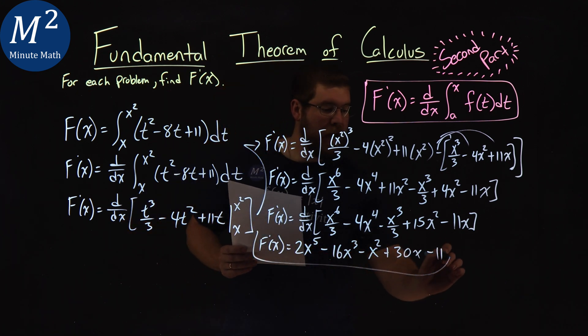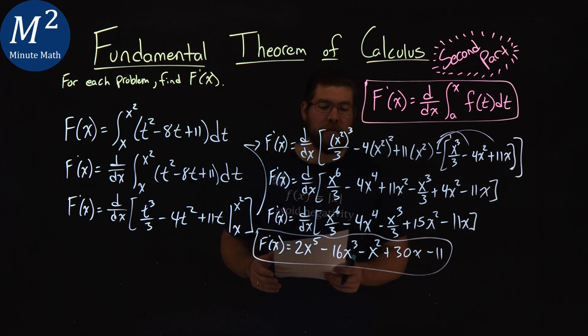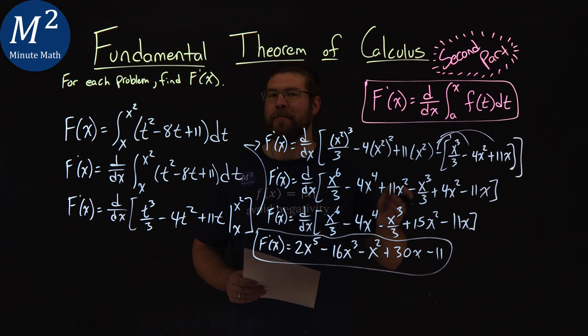And after all that, we have our f prime, capital F prime of x. And that's equal to 2x to the fifth minus 16x to the third power minus x squared plus 30x minus 11.